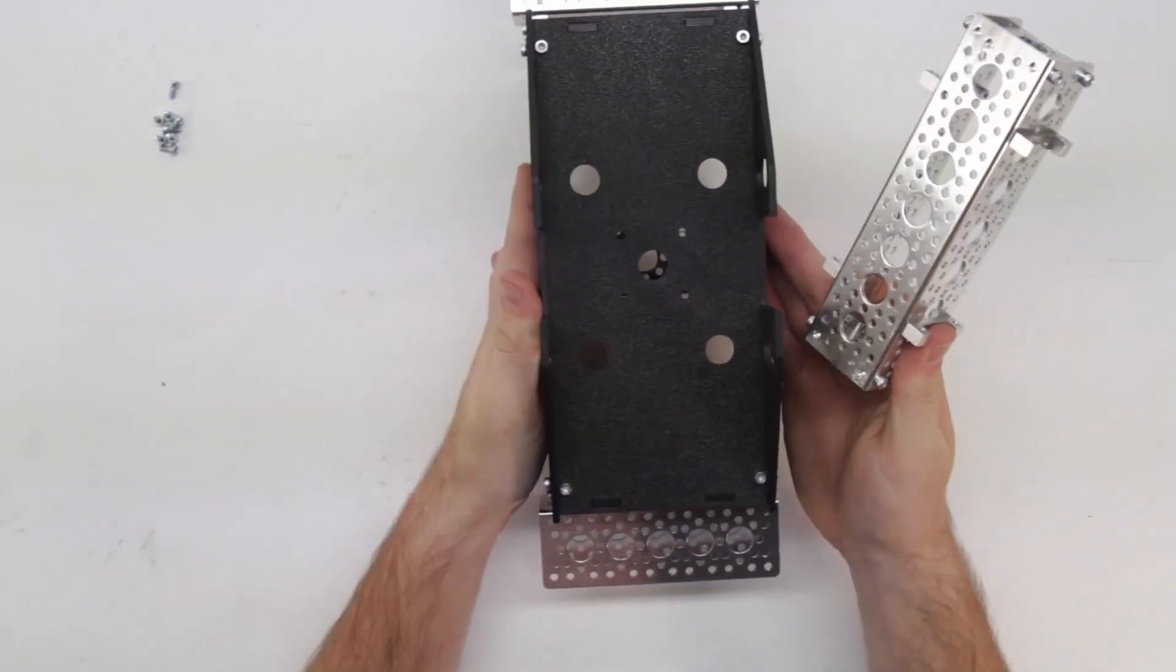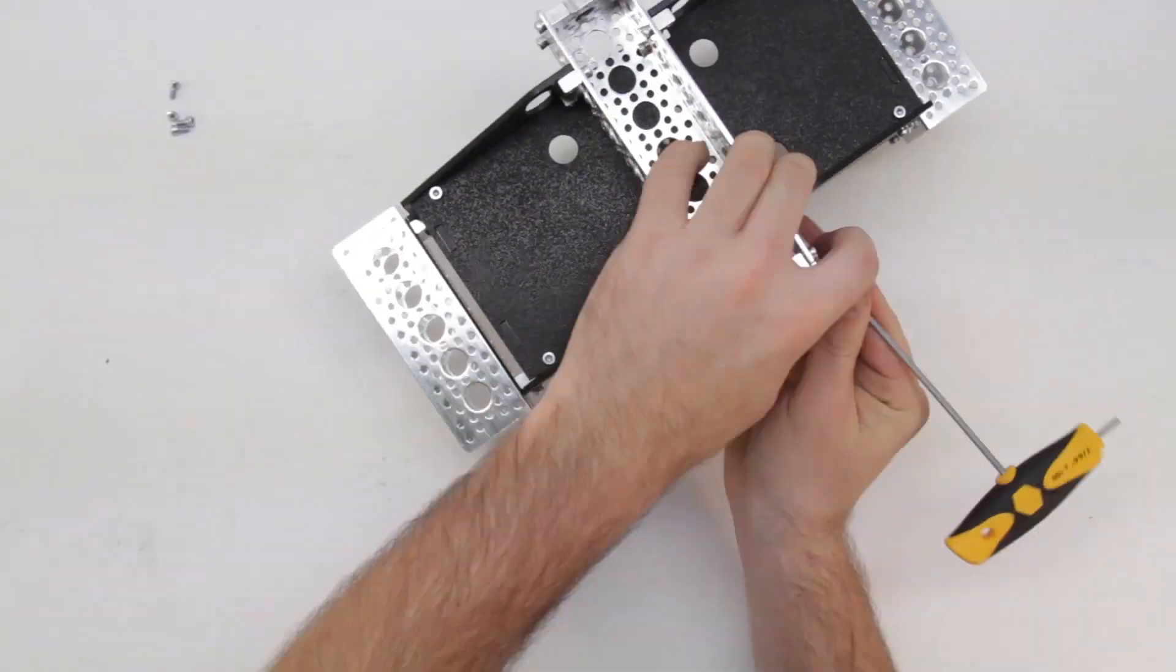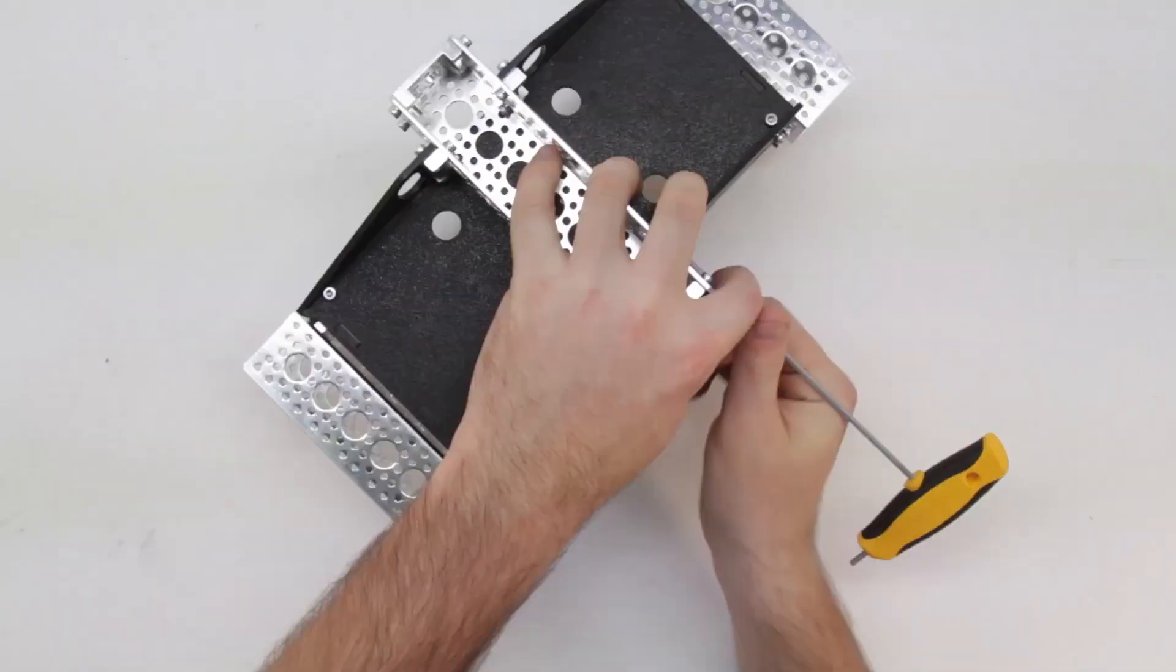Once you have that together, fasten it to the bottom of the chassis. If you have put it together correctly, your side mounts will sit on the inside of the ABS plates.